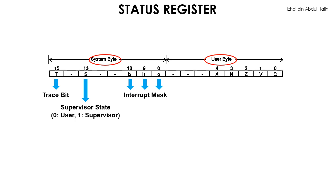Let us now move on to the bits in the user byte, beginning at the least significant bit. Bit 0 is the carry bit or carry flag. Its value changes to 1 when an arithmetic operation results in a carry out of the MSB, or if an arithmetic operation requires a borrow into the MSB of the operand. Operand is just another word for data.